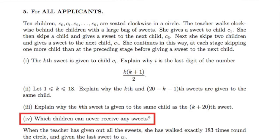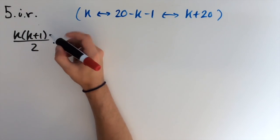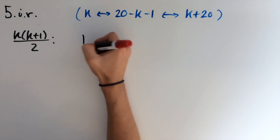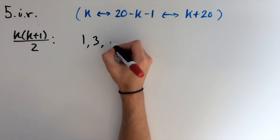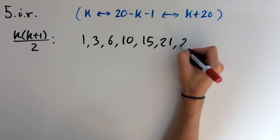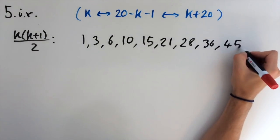For part IV, we are asked which children can never receive any sweets. So for this question, we're just going to use our formula and plug in values of k to see what pattern we get. So for k equals 1, we just get 1, and then pattern carries on 1, 3, 6, 10, 15, 21, 28, 36, 45. Now I'm going to stop there.